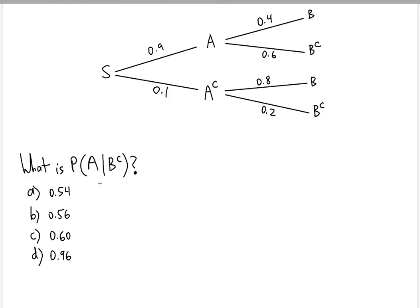So notice you can't really answer this question by first thinking, well, where's the B complement? I don't see the B complement. How can I get to A if I don't see B complement in the first place when I'm starting at the starting point? So this is where the famous Bayes formula comes into play.